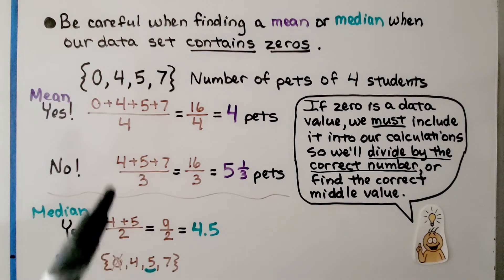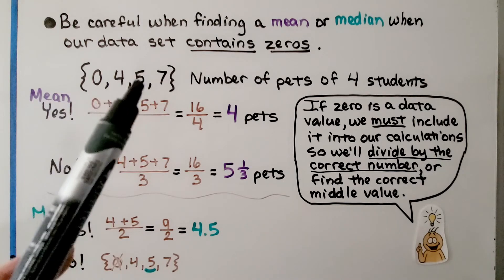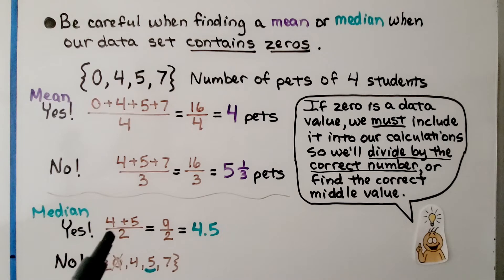For the median, we have 4 and 5 in the middle. We divide by 2 and get 9 halves, which is 4.5. If we didn't include this 0, we'd think that 5 was the middle number, and that's wrong. The median is 4.5, not 5. We needed that 0 to find the mean of these two middle numbers.